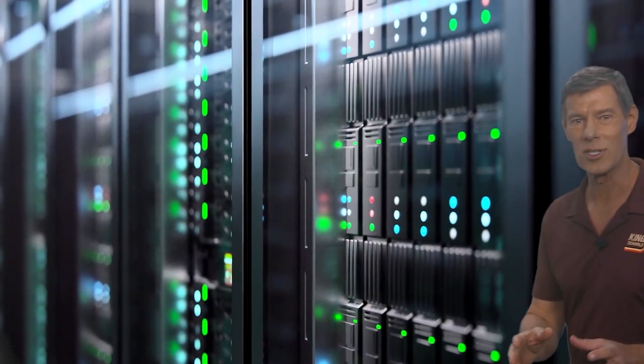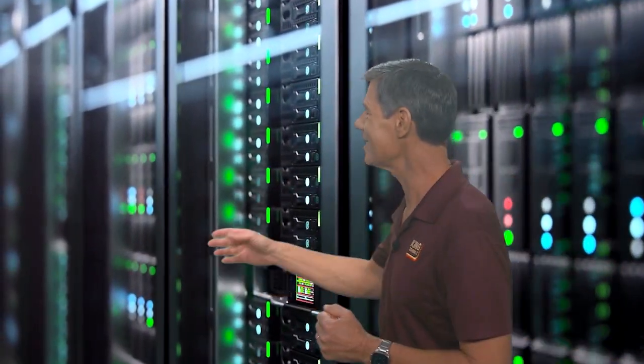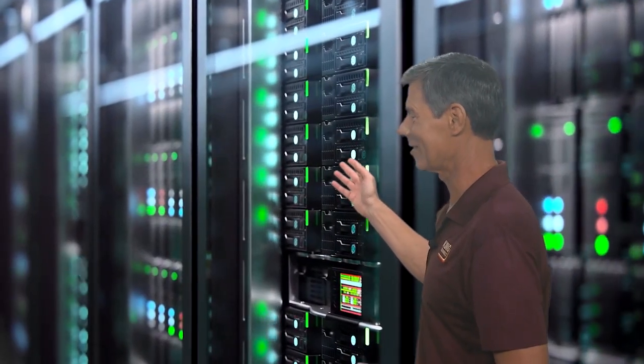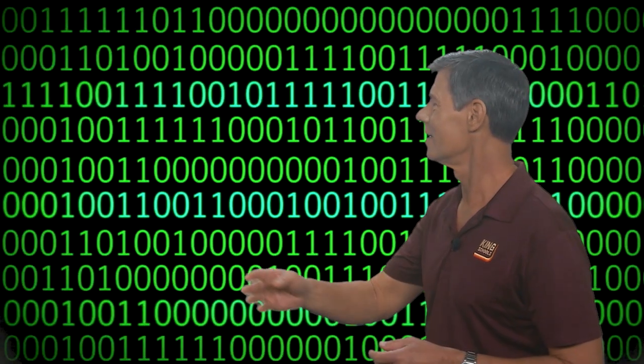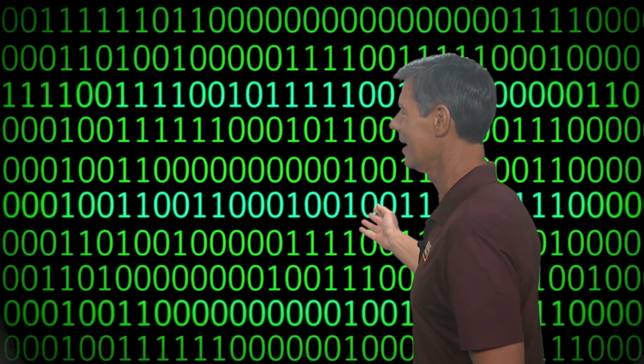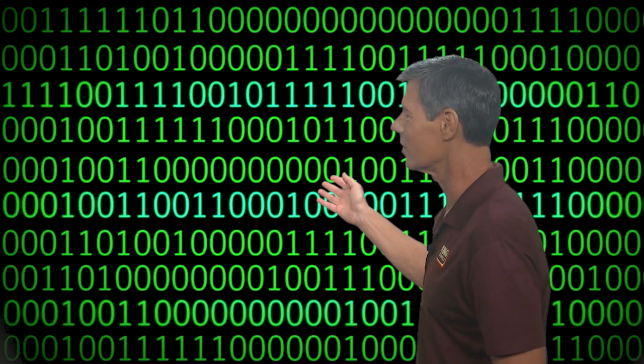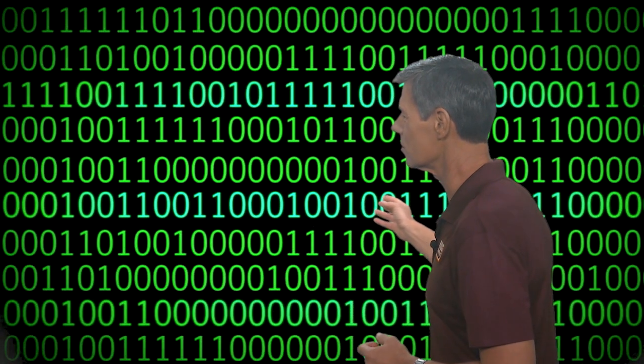Now the last number system that we need to talk about is binary notation. And that's the language of our friend, the computer. Now binary only has two digits, zeros and ones. And the information is stored as those zeros and ones. It's kind of like an on-off switch, which forms strings of binary numbers that can be translated into something more useful.